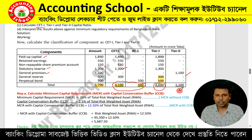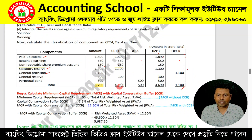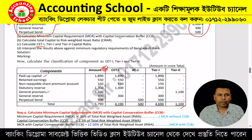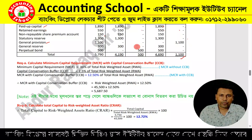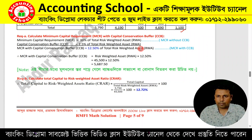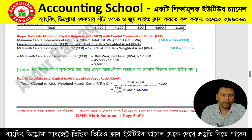At Tier 1, we add Additional Tier 1 to CET1 (490) to get Tier 1 capital of 590. For Question A, Minimum Capital Requirement (MCR) with Capital Conservation Buffer (CCB): MCR is 10% of total Risk-Weighted Assets (RWA).